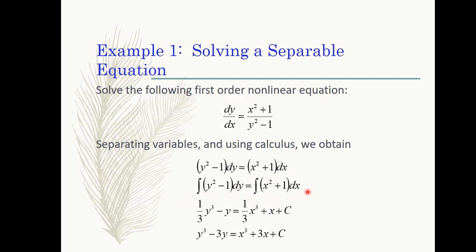We proceed to integration right after separation of variables. We apply the appropriate integration technique and this is our answer. Since we are dealing with indefinite integrals, we write an arbitrary constant on the left and another on the right. Since we have two arbitrary constants whose values are not specified, we can combine them into one arbitrary constant C, which should always be written on the right side of the solution. So y cubed minus 3y equals x cubed plus 3x plus C is the solution of this given first-order separable differential equation.